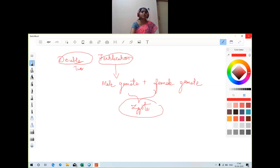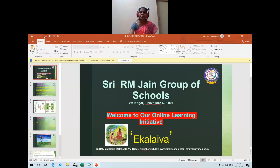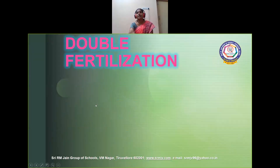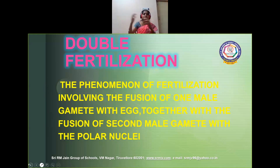In this session we will see in detail about double fertilization. Before going into double fertilization, let's have a recap of our embryo sac formation — that is female gametogenesis, mega gametogenesis — which is very important to learn about double fertilization. Double fertilization is a phenomenon of fertilization involving the fusion of one male gamete with egg, together with the fusion of a second male gamete with polar nuclei. Recall the structure of our pollen grain and pollen-pistil interaction.